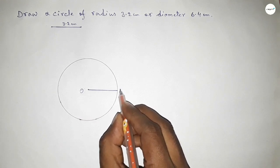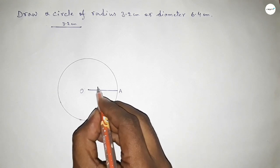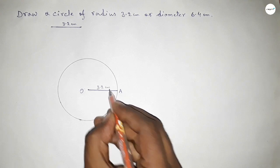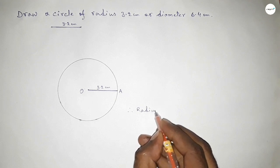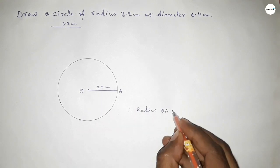Taking here the center O and a point A, so OA equals 3.2 centimeters. Therefore, radius OA equals 3.2 centimeters.